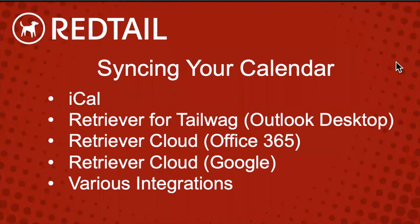We're also going to talk about syncing your calendar. The options are very similar, except there's one more: iCal feed, which is just for the calendar. We also have the same options as contacts — Retriever for Tailwag and Retriever Cloud, both Office 365 and Google. It depends what you want to sync. You can sync contacts, calendar, or even choose to sync both on most of these options.